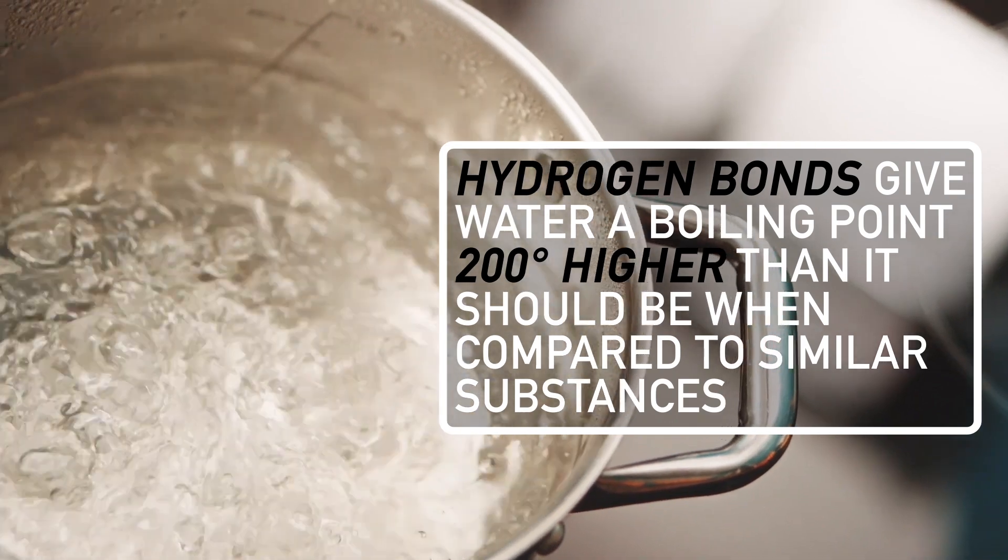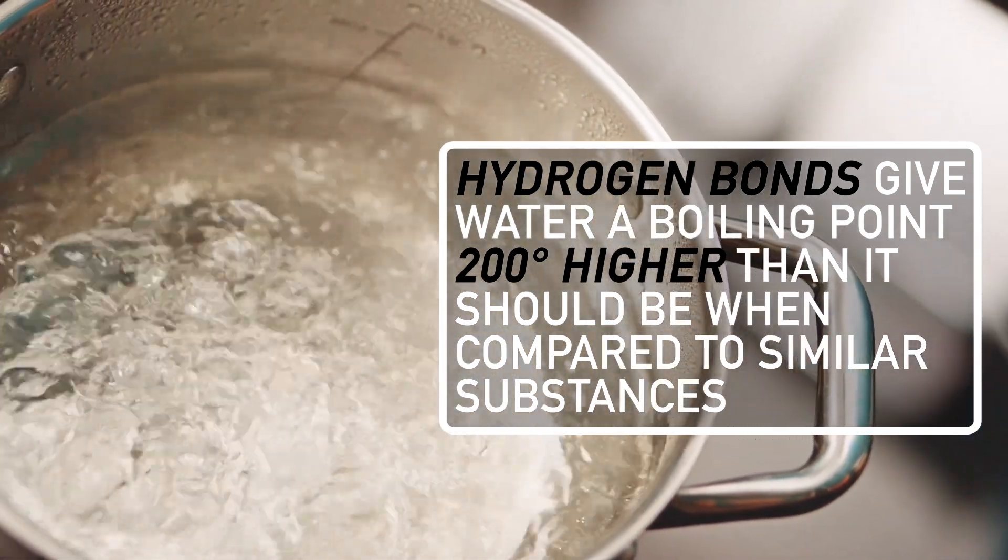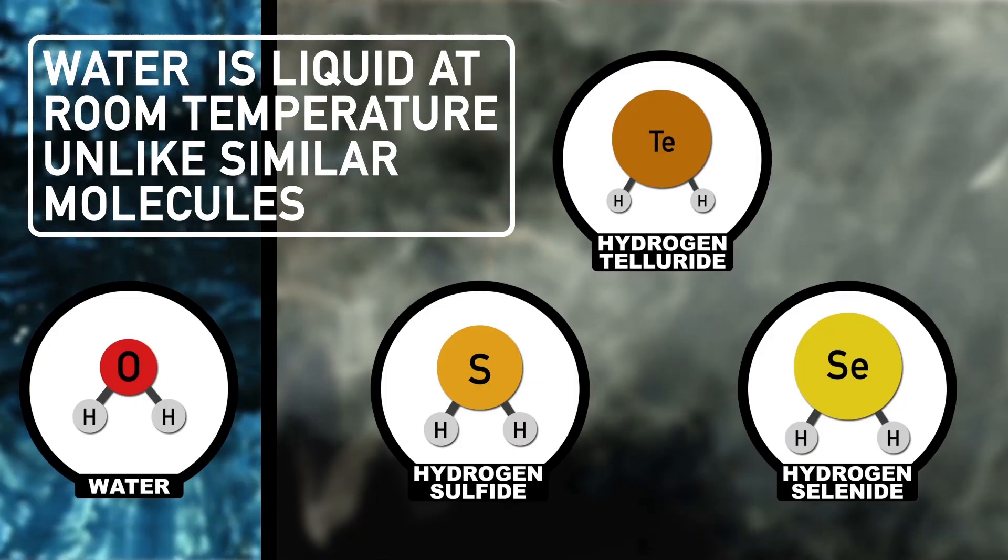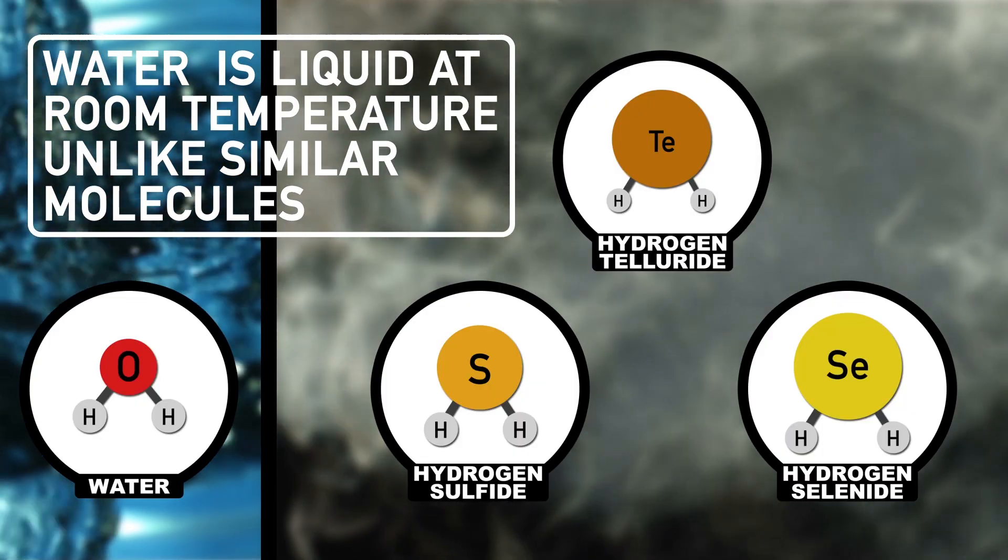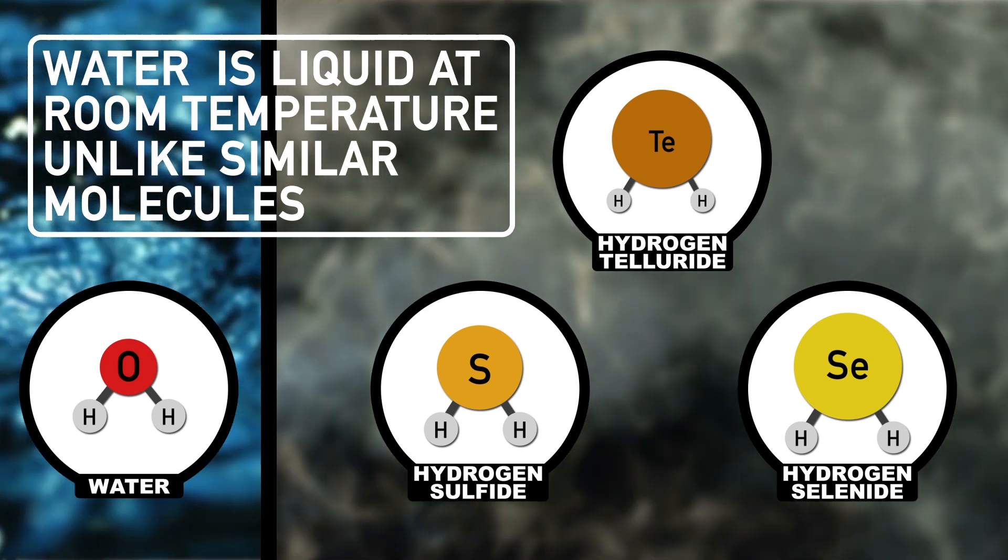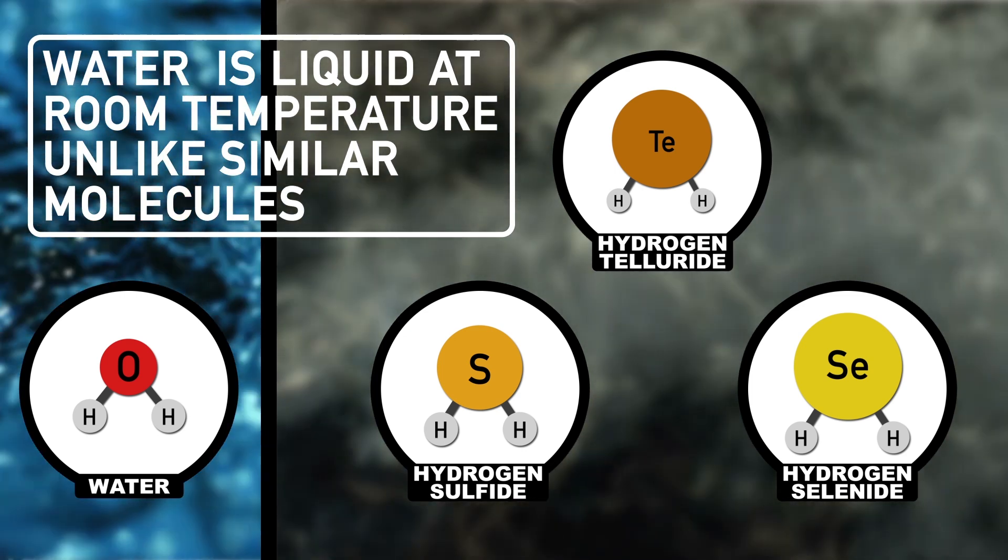These hydrogen bonds give water a boiling point that is about 200 degrees higher than it should be when compared to other similar substances. The result is that water is a liquid at room temperature, but other similar molecules like hydrogen sulfide, hydrogen selenide, and hydrogen telluride are all gases.